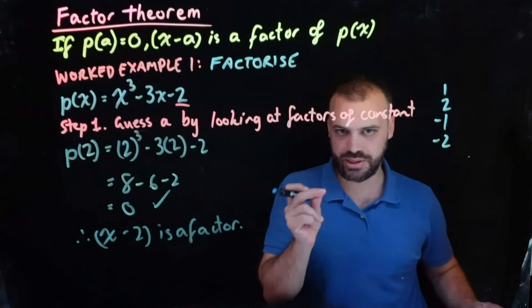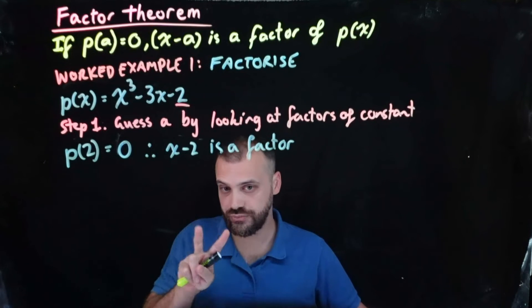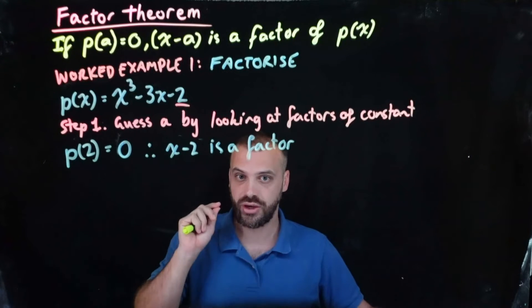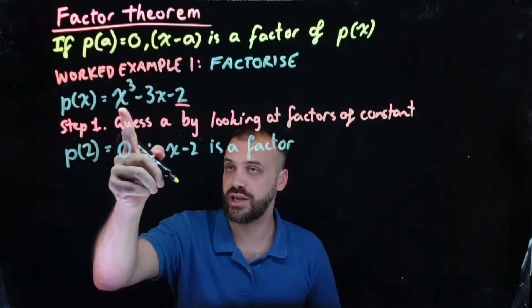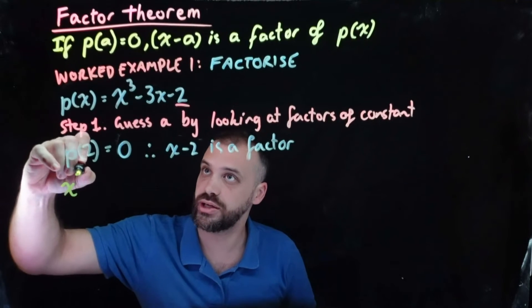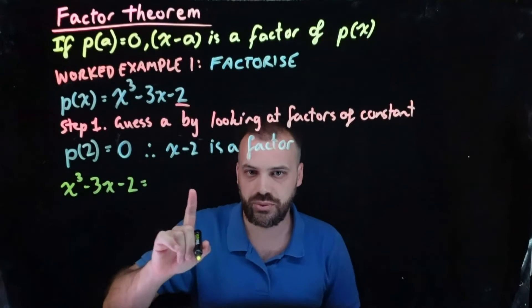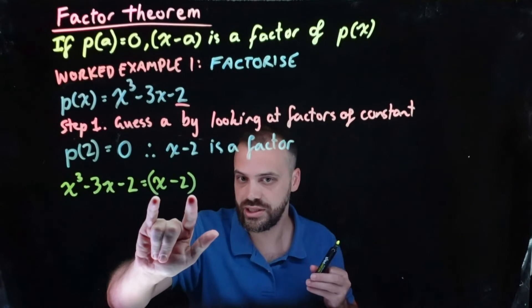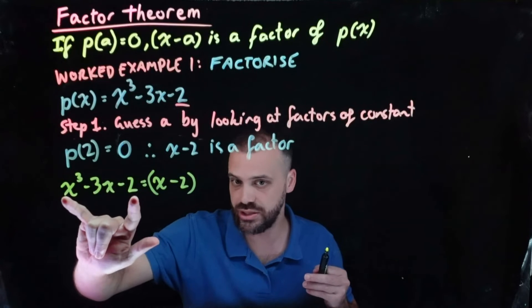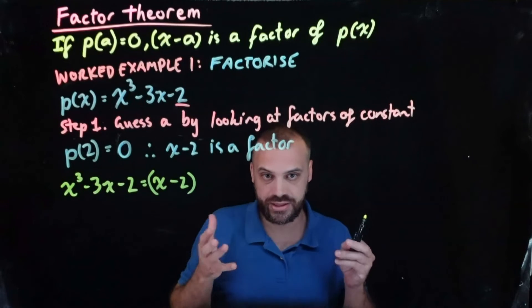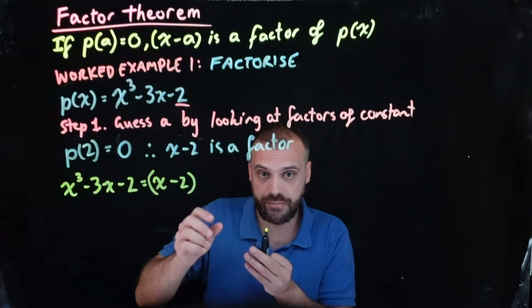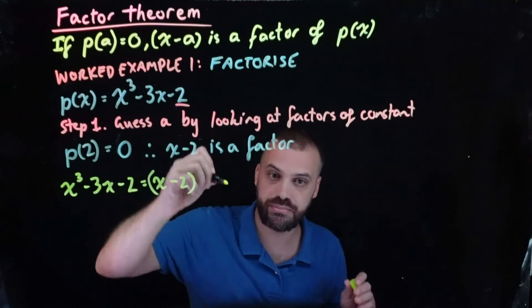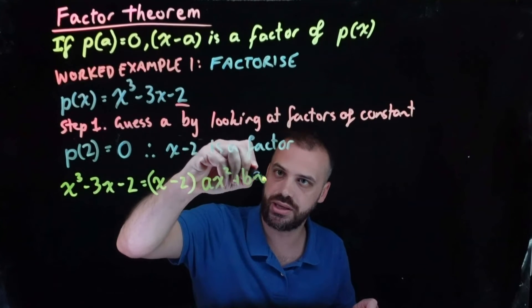Now that we know x minus 2 is a factor, there are two different ways to proceed. I'm going to show you method 1, the method I prefer, and then I'll show you the other method. We know that p of x is a cubic, so we can write x cubed minus 3x minus 2 equals x minus 2 times a mystery quadratic: ax squared plus bx plus c.